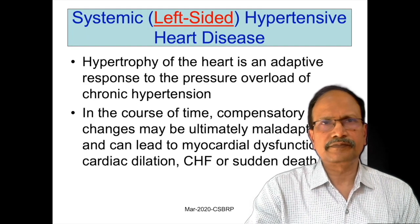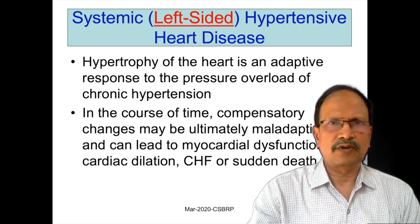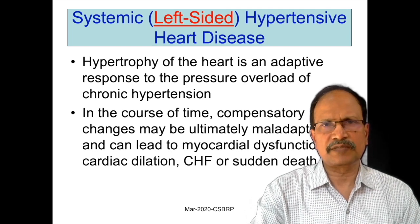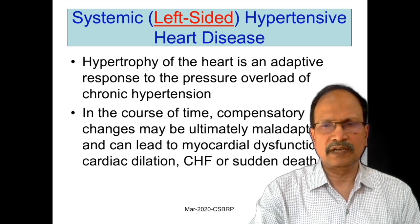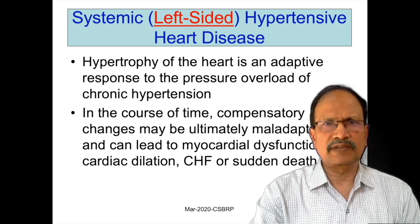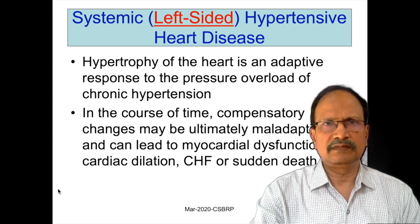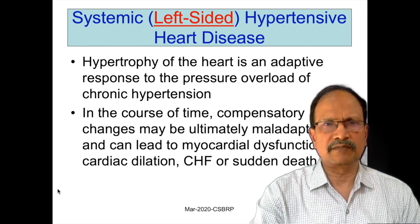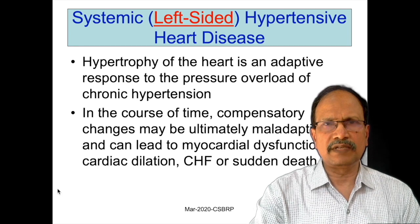Coming to individual conditions like systemic hypertension heart disease, which is left-sided heart disease: hypertrophy of the heart is an adaptive response to pressure overload or increased workload of the left ventricle. In the course of time, these compensatory changes may ultimately prove to be maladaptive, and there may be diastolic dysfunction mainly in the form of cardiac dilatation, congestive cardiac failure, or even sudden death.